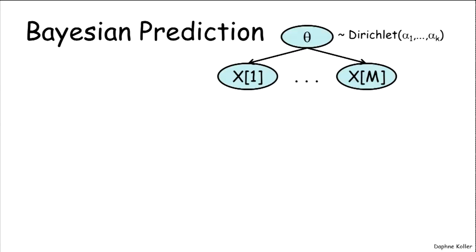Now let's put these two results together and think about Bayesian prediction as a function of, as the number of data instances that we have grows.